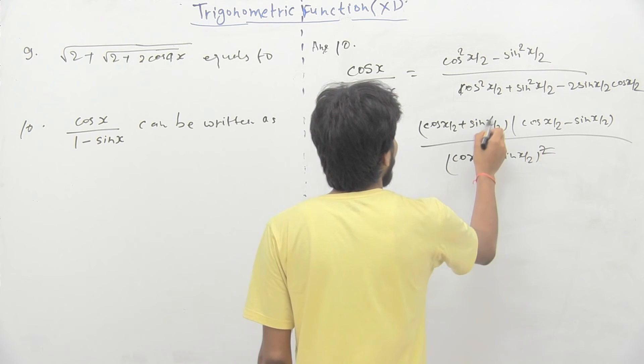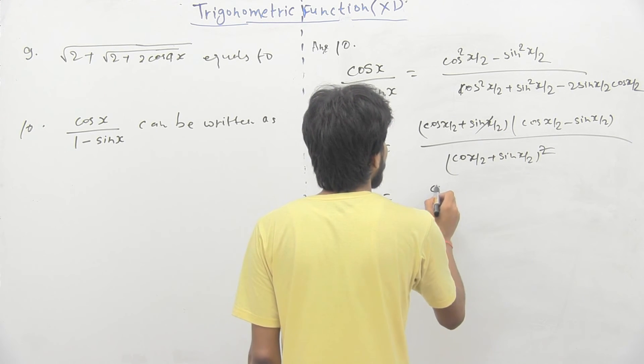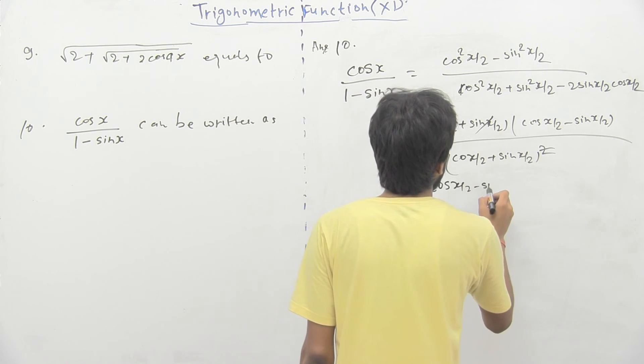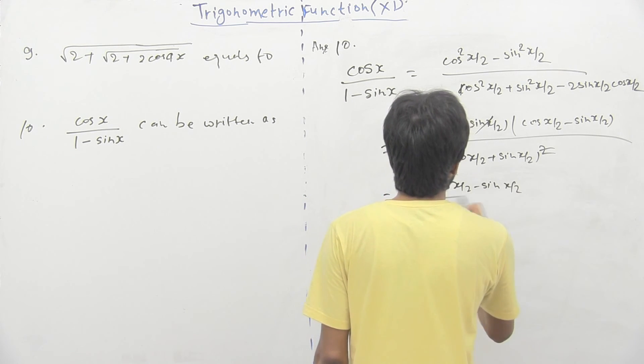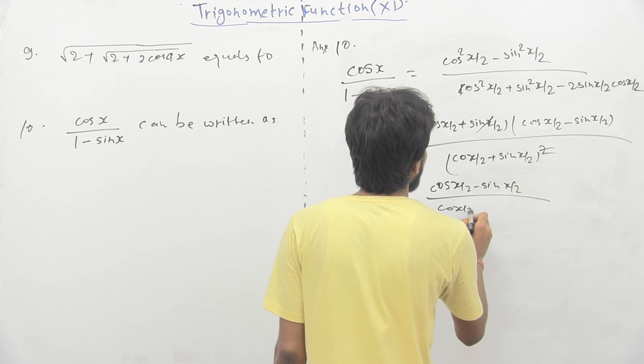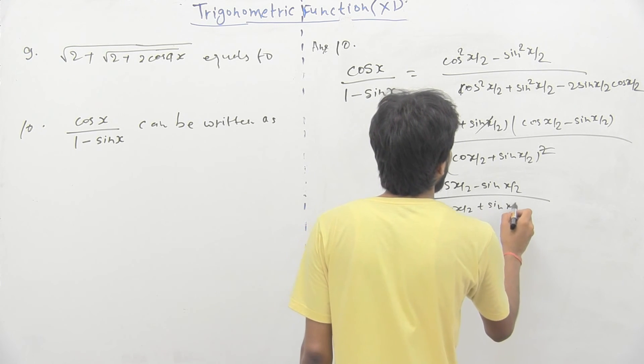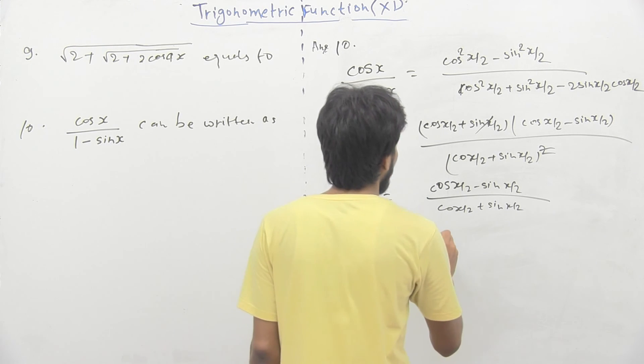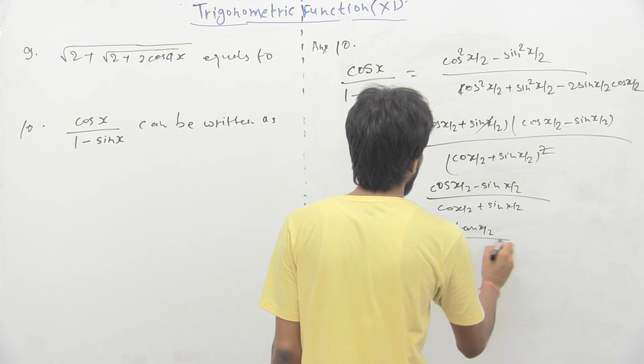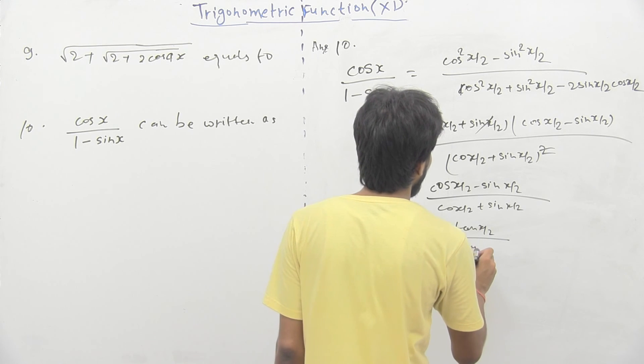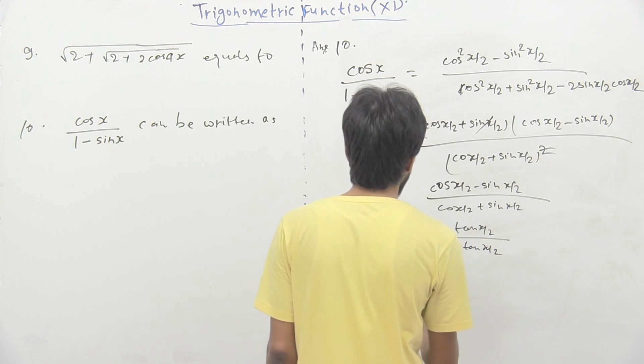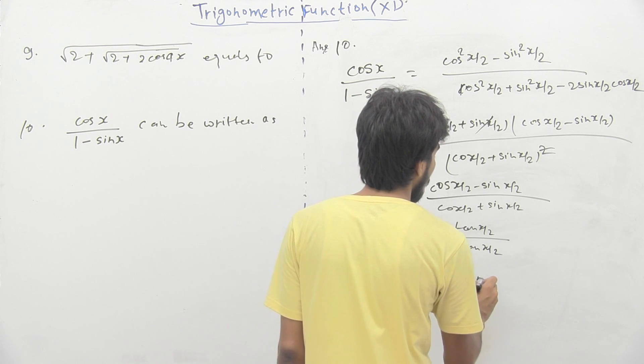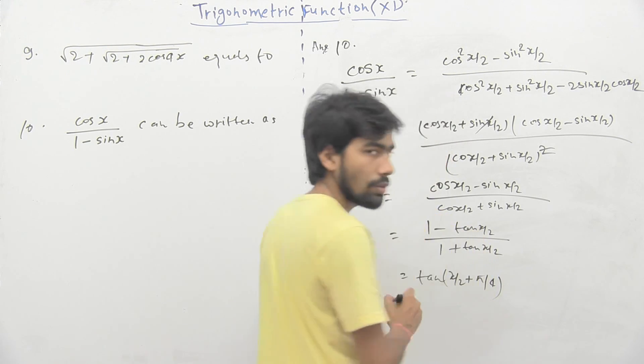So, it will get cancelled out. We will have cos x by 2 minus sin x by 2 divided by cos x by 2 plus sin x by 2. Now, divide both the terms with cos theta, we will have 1 minus tan x by 2 divided by 1 plus tan x by 2 which is formula for tan of x by 2 plus pi by 4.